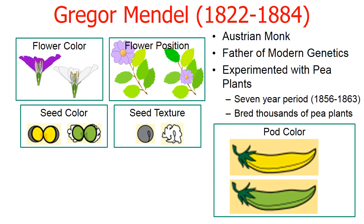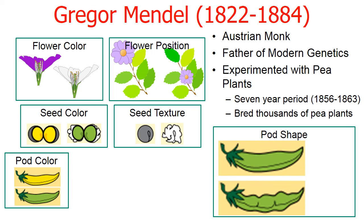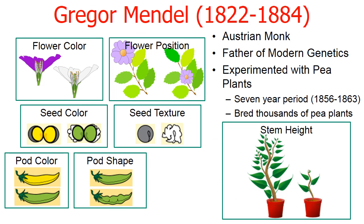He examined the color of the pods — were the pods yellow or green? The shape of the pods — were the pods puffy and inflated or were they constricted? And lastly, the stem height — did the pea plants grow tall or short? So these were the seven traits that Mendel experimented with and observed.